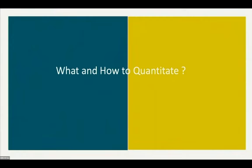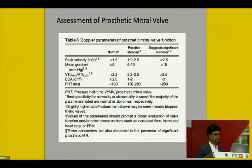Quantitative assessment of prosthetic mitral valve: peak velocity — normal less than 1 m/s, significant if more than 2.5 m/s; mean gradient — normal less than 5 mmHg, significant if more than 10 mmHg; prosthetic valve VTI/LVOT VTI ratio — normal less than 2.2, significant more than 2.5; effective orifice area — normal more than 2 cm², significant less than 1 cm²; pressure half-time — normal less than 130 ms, significant stenosis more than 200 ms.